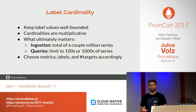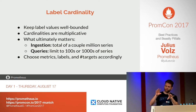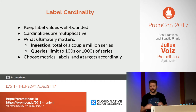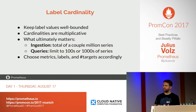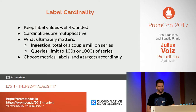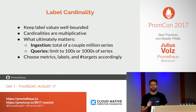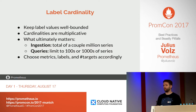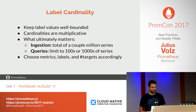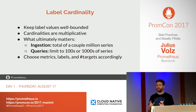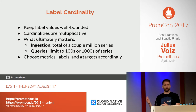Keep your label values well-bounded. Keep in mind that cardinalities are multiplicative: to get the total number of series in a given Prometheus server, you multiply all the metrics by the individual cardinalities of their labels, times the number of targets you're scraping. A single Prometheus server is typically fine with a couple of million active series. For queries, try to keep a single metric to maybe a couple of tens of thousands of series — that should really be the upper limit. So choose your metrics, their labels, and number of targets accordingly to stay within those limits.